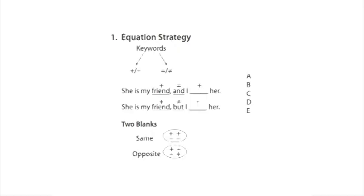Now if you have a two blank sentence, four possible patterns emerge. Positive, positive, negative, negative, positive, negative, or negative, positive. Notice the first two are going in the same direction. The second two are going in the opposite direction. And this can help you. Once again, eliminate any answer choice that does not follow the pattern you're looking for.